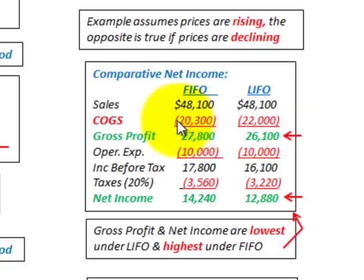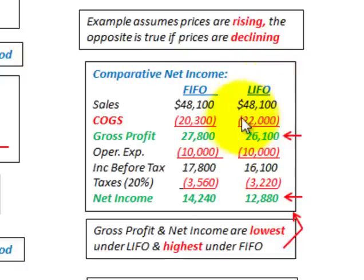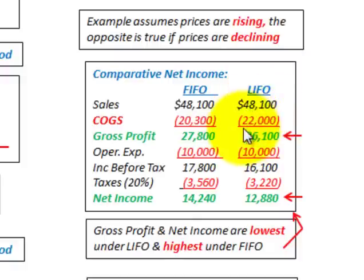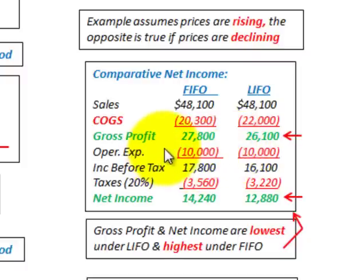The reason FIFO's cost of goods sold was lower is because we used the earlier, lower-priced purchases to cost out our sales. LIFO used the latest, highest prices against those sales. As a result, gross profit is higher under FIFO than under LIFO because cost of goods sold was lower. Operating expenses are the same under both methods.